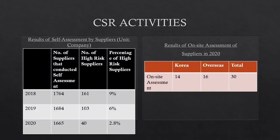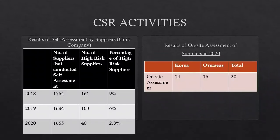About CSR activities, the result of the self-assessment process made by suppliers: in 2018, 1,764 suppliers conducted self-assessment, the number of risk suppliers was 161, and the percentage of high-risk suppliers was 9%. In 2019, 1,684 self-assessments were conducted, the number of risk suppliers was 103, and the percentage of high-risk suppliers was 2.8%. Year by year the percentage of high-risk suppliers decreased. For the on-site assessment of suppliers in 2020, Korea had 14, other areas 16, with a total of 30.